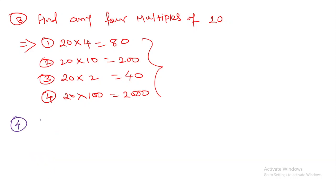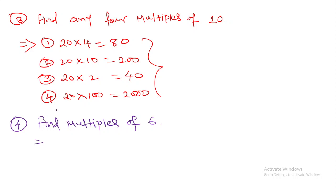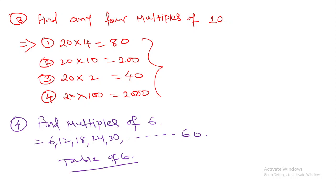Next example: Find multiples of six. Here we are not told how many to find, so you can find any three, four, or five multiples. Since six is a small number, we generally know the table of six. Multiples are nothing but the numbers present in that table. So we start from six, twelve, eighteen, twenty-four, thirty, up to sixty. I write here ten multiples — multiple is nothing but reading the table of a particular number.